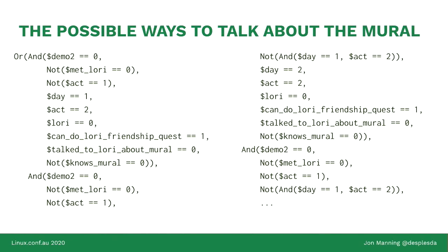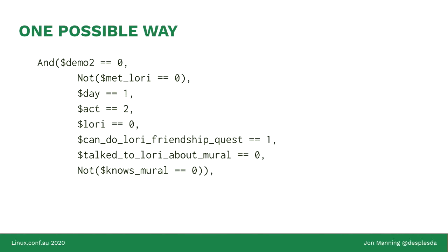For example, one way to reach that point: the variable demo0 equals 0, it is not the case that metLori equals 0, it is not the case that the act variable contains 1, and so on. In plain terms: it's act 2 day 1, you have spoken to Lori before, you can do Lori's friendship quest, you're not strangers, you haven't spoken about the mural before, and when you start the conversation you have not already spoken to Lori that day — because you can't have the same conversation twice in one day.